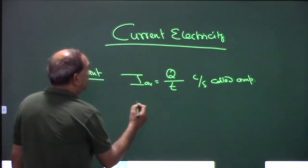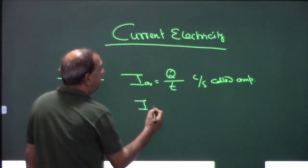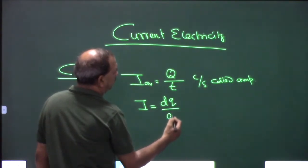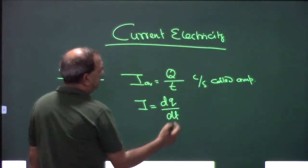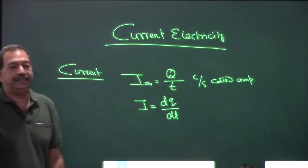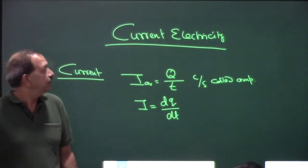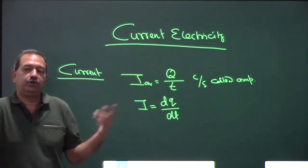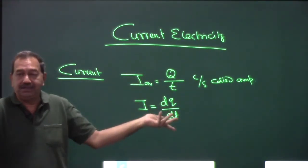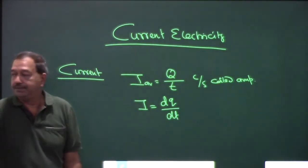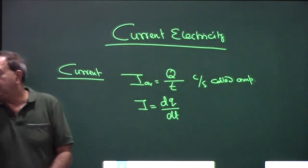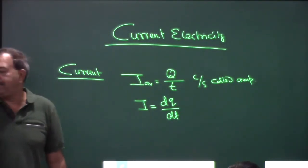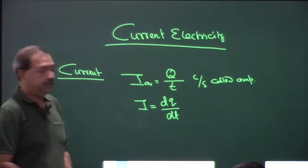The current at any instance can be found by differentiation: dQ/dT. If the current is constant, then instantaneous and average current will always be the same.